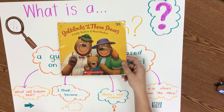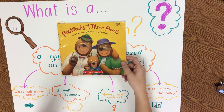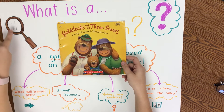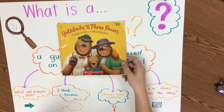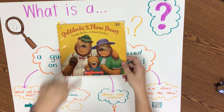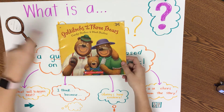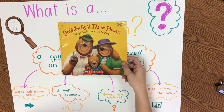So I think that this story is going to be about bears, because there are bears on the cover. My evidence — we always need to have evidence! I drew a magnifying glass because we've got to look for clues in our story to help us make predictions. So I predict that this story is going to be about three bears, because the evidence shows that there are three bears on the cover of my story.